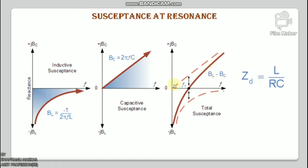Regarding susceptance at resonance: inductive susceptance BL is inversely proportional to frequency, represented by a hyperbolic curve. Capacitive susceptance BC is directly proportional to frequency, represented by a straight line, where BC = 2πfC and BL = −1/(2πfL). The plot of total susceptance of a parallel resonance circuit versus frequency shows the difference between the two susceptances.